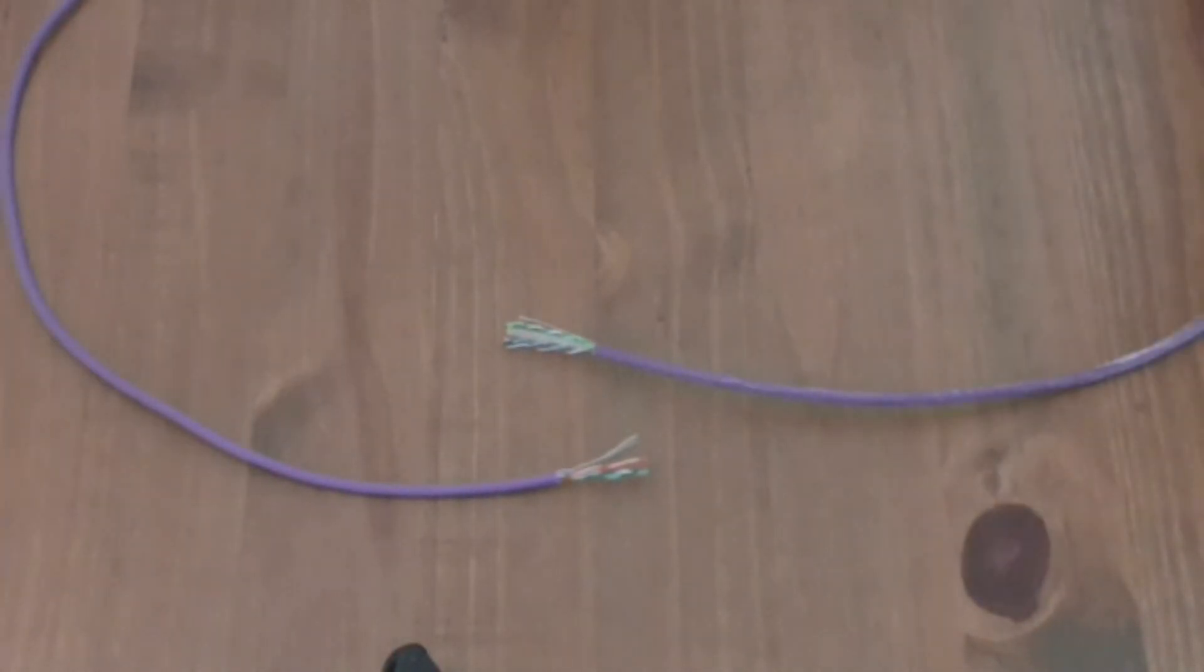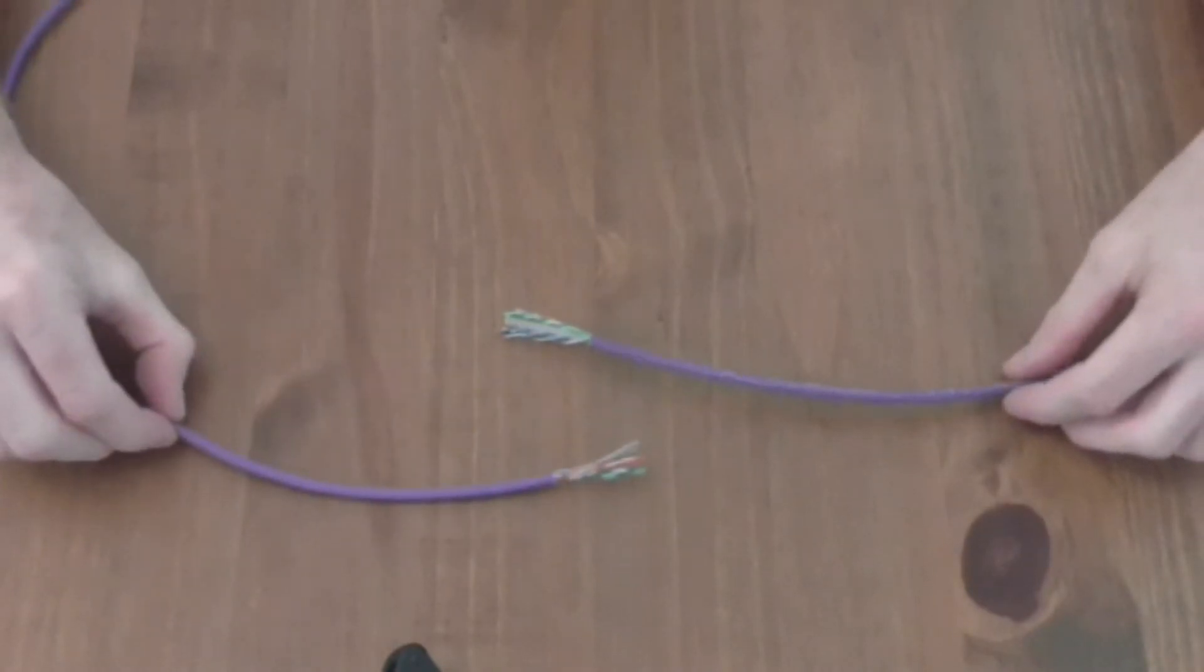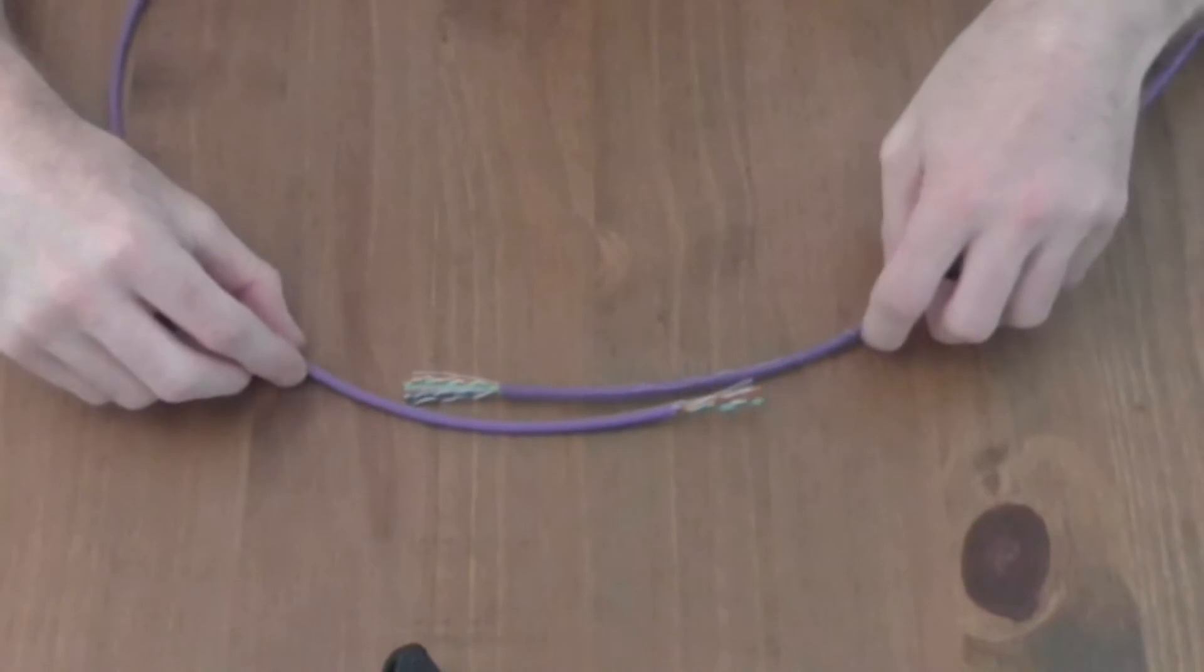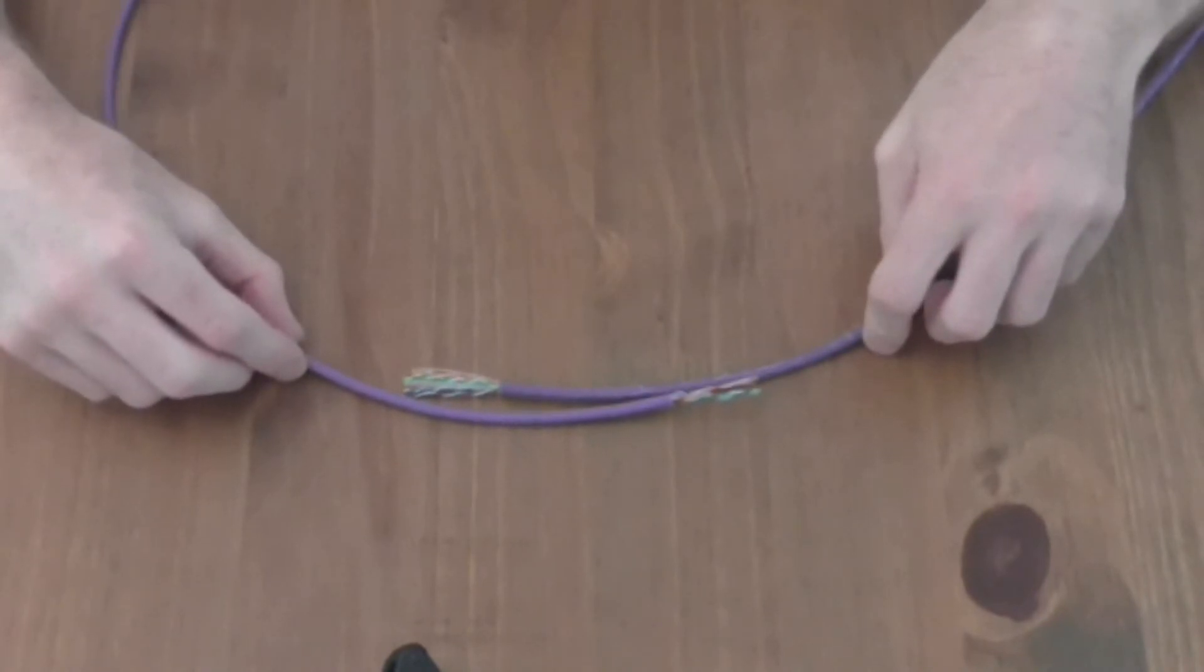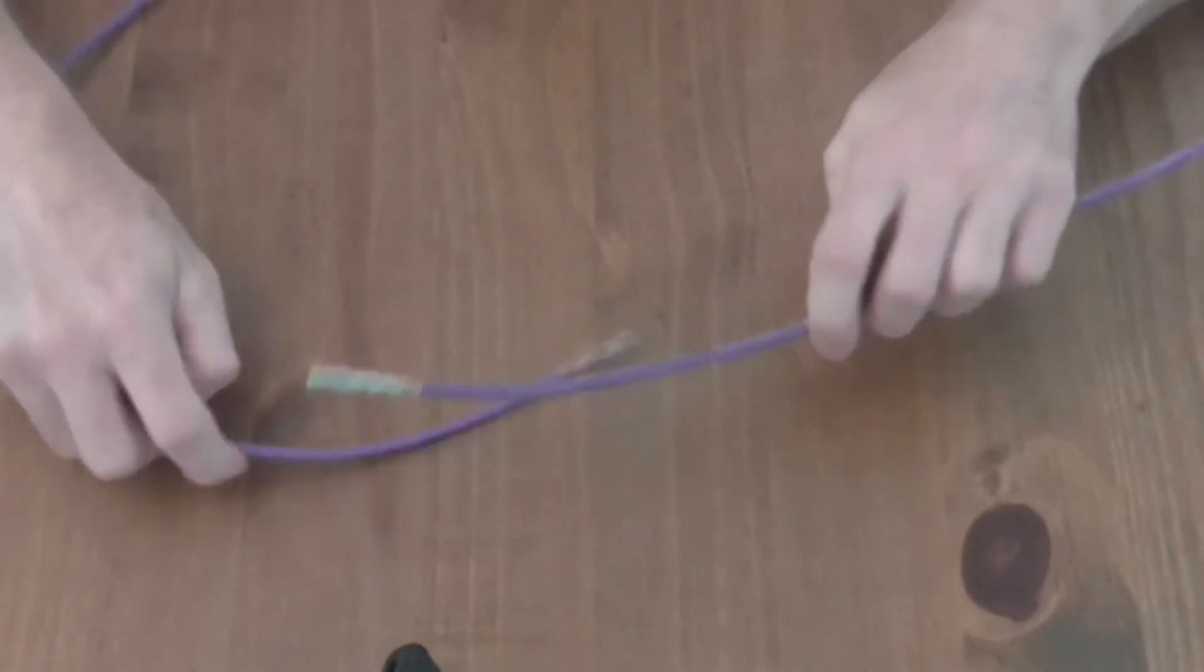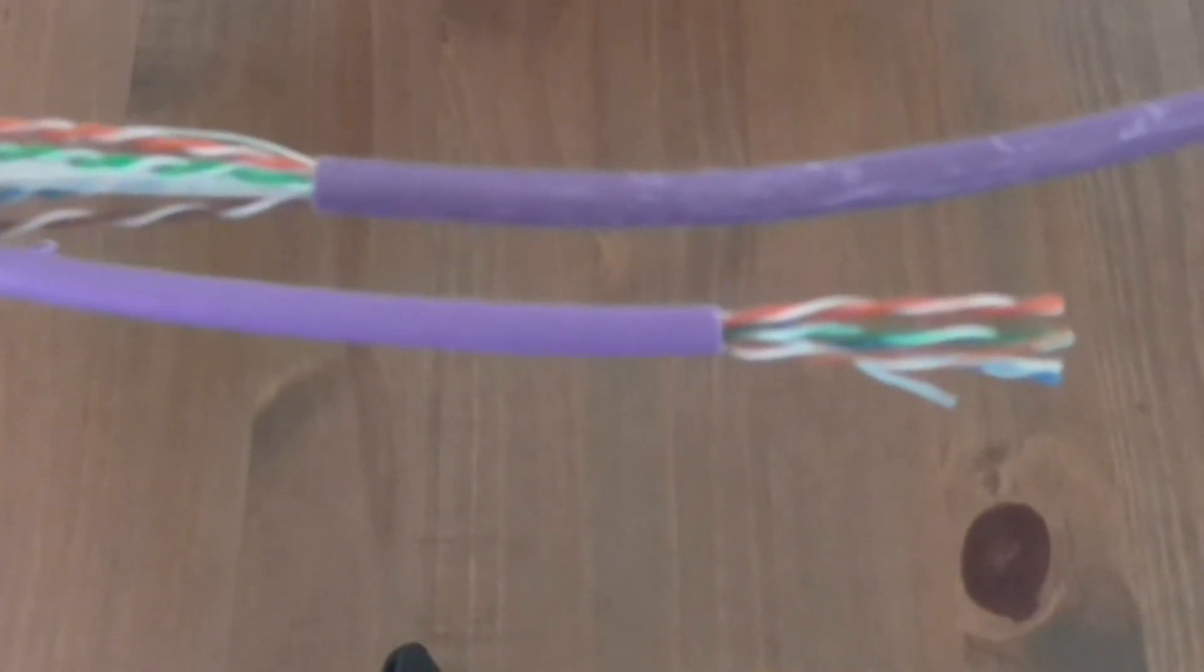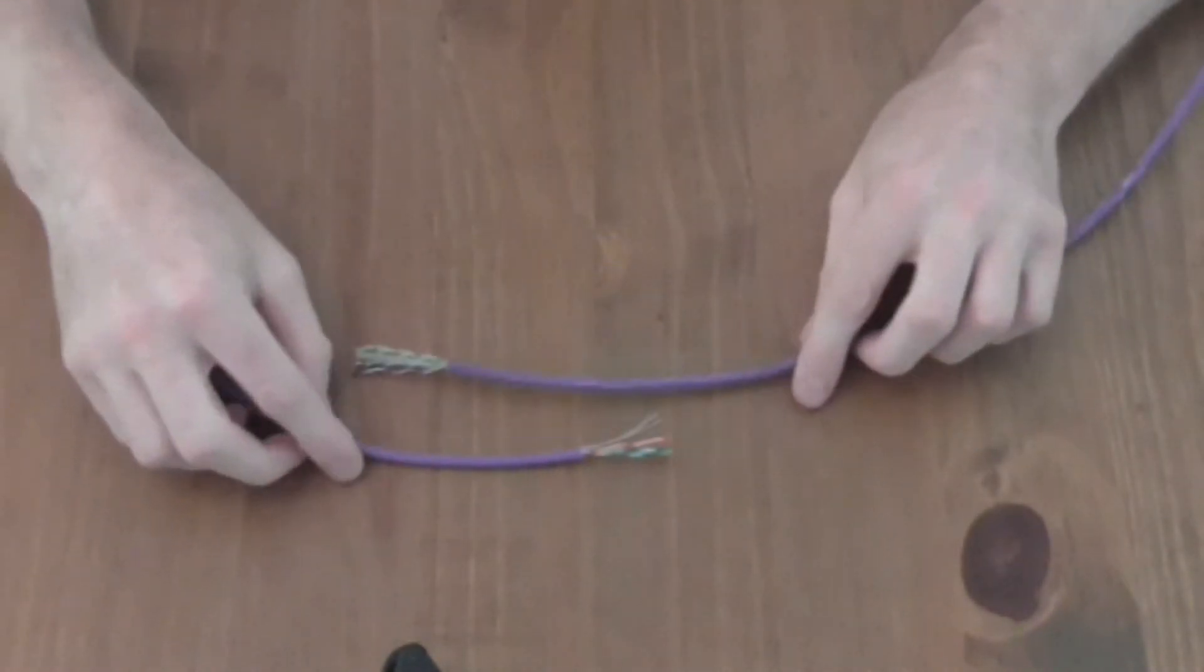So we'll go straight into it. Obviously this is a Cat5, this is a Cat6. You can see straight away there's a difference between these cables and that is the thickness. It's immediately apparent. If I hold them closer to the camera you can see straight away there is a difference. This Cat5e is considerably thinner than the Cat6.